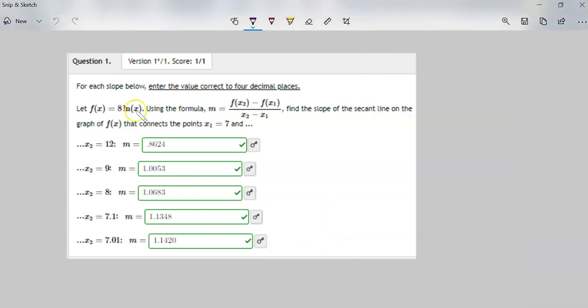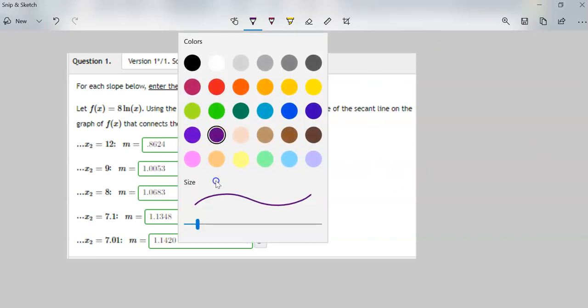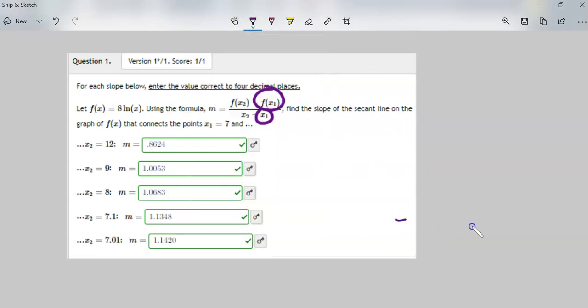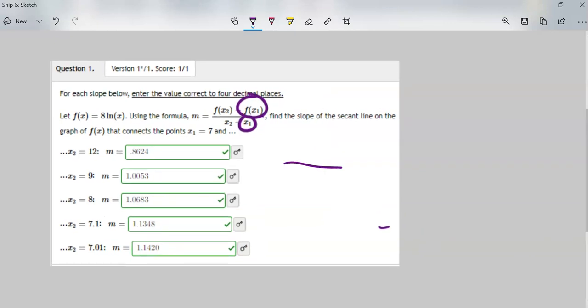But before we jump into a shortcut, let's take a look at this. f of x is 8 natural log of x, and x sub 1 is 7. So this part right here is a 7, and this part is 7 plugged into 8 natural log of 7. This will always be minus 7, and this will always be minus 8 natural log of 7.